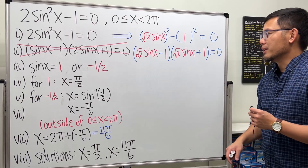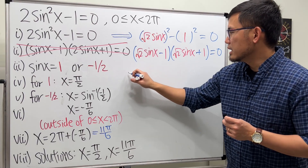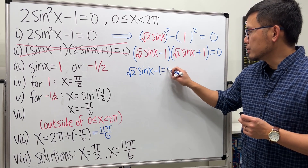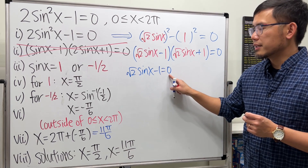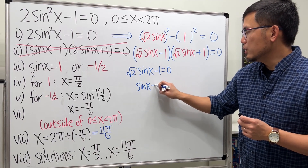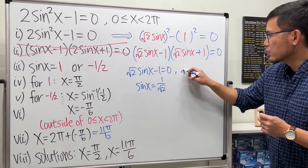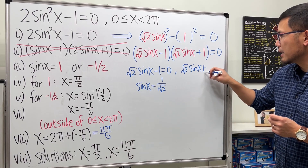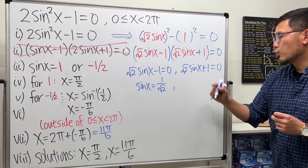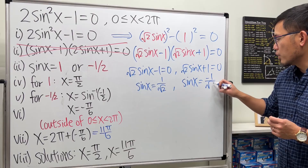Now let's solve this correctly. Setting the first factor to zero: square root of 2 sine x minus 1 equals 0. Move 1 to the other side and divide by square root of 2, giving sine x equals 1 over square root of 2. Similarly, from the second factor: square root of 2 sine x plus 1 equals 0, giving sine x equals negative 1 over square root of 2.